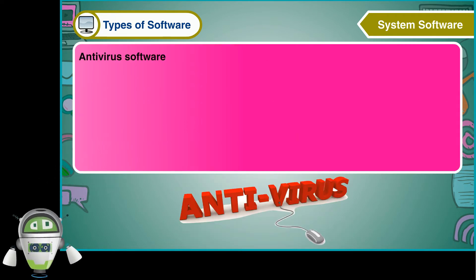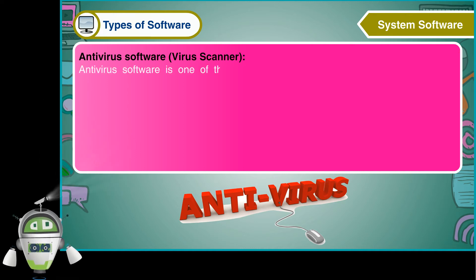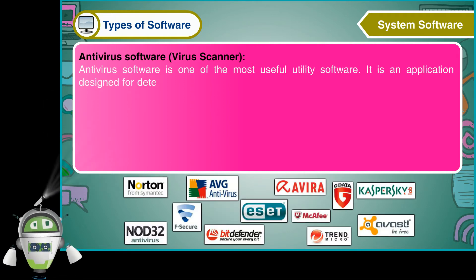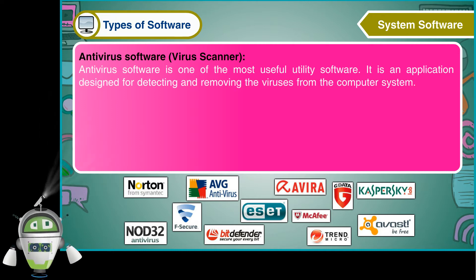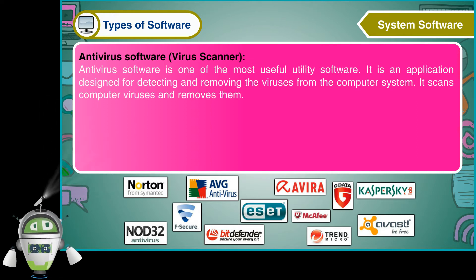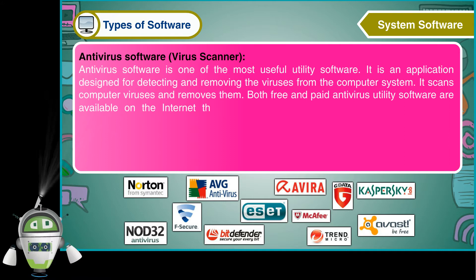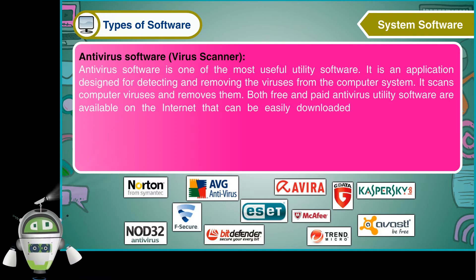Antivirus software is one of the most useful utility software. It is an application designed for detecting and removing viruses from the computer system. It scans computer viruses and removes them. Both free and paid antivirus utility software are available on the internet that can be easily downloaded and installed on the computer system.